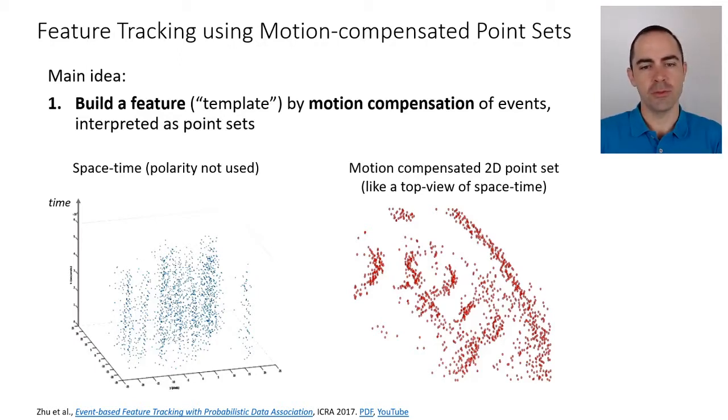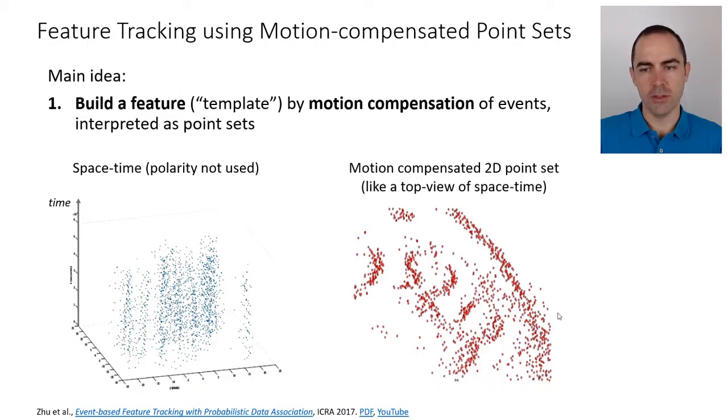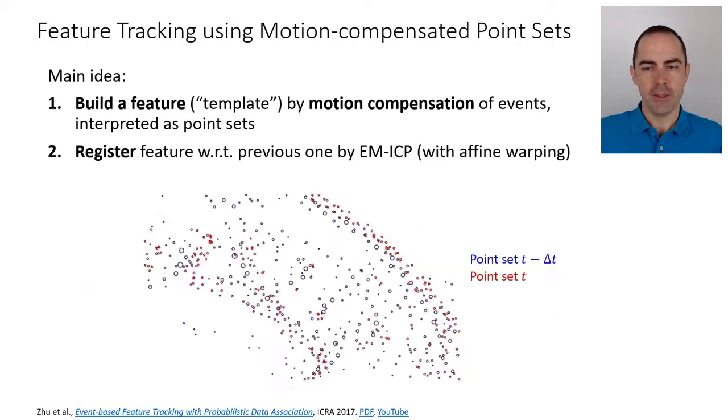That's step number two. Step number one, sorry, the first step: you compute the flow, the optical flow, which is basically shared for all the events in this patch. It's a direction in space-time that you use to project the events into a reference time. What it gives is, just from the events, a 2D point set on the image plane that represents the edge pattern that we want to track.